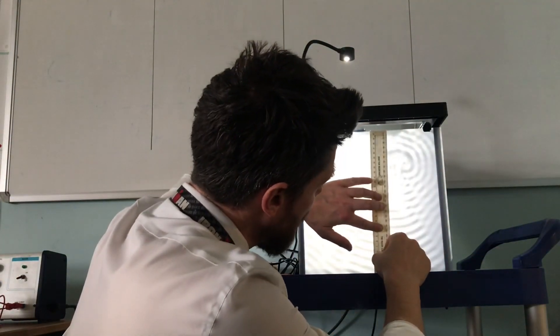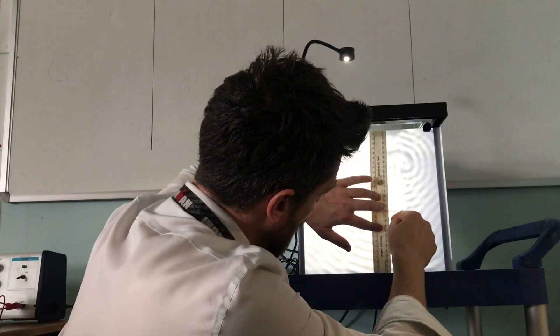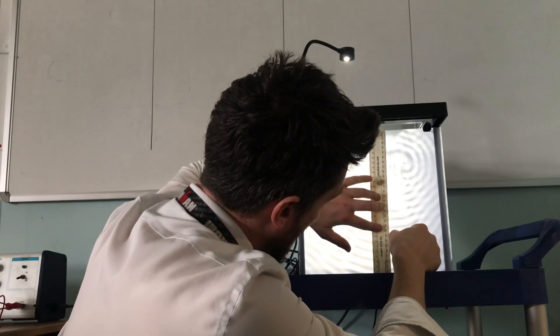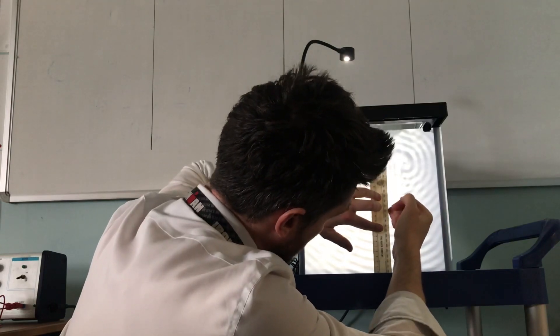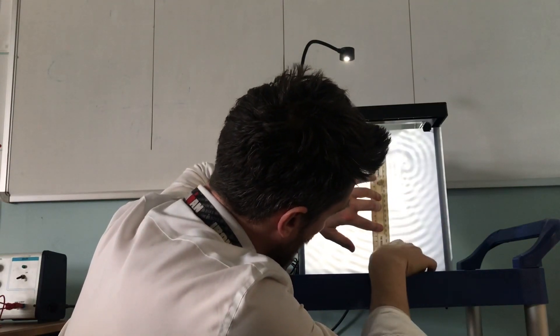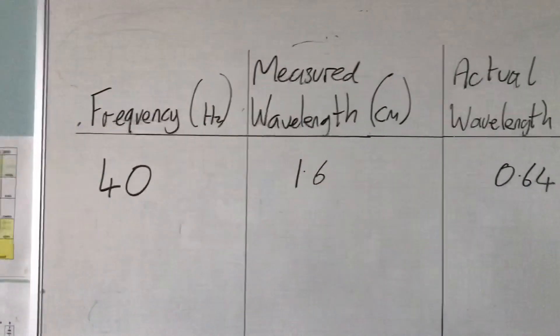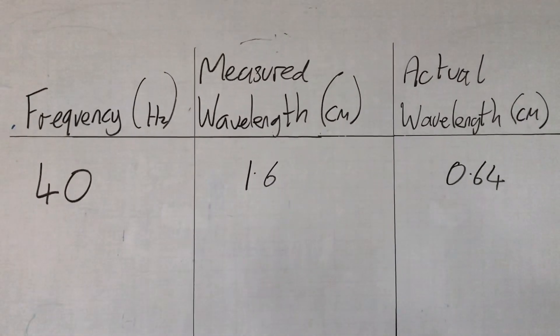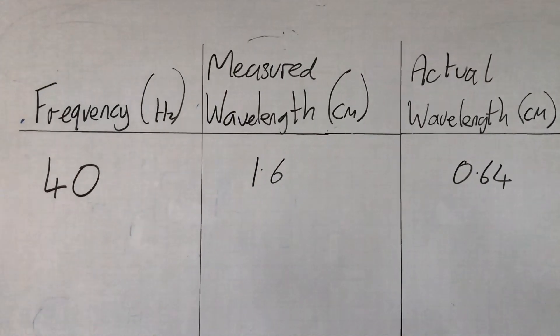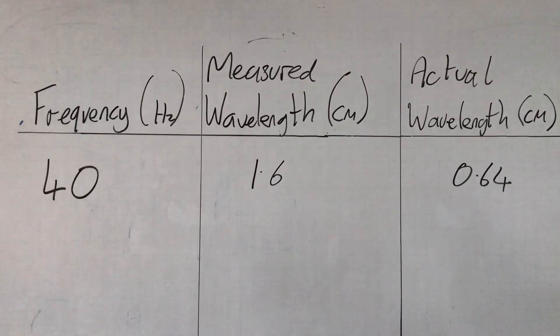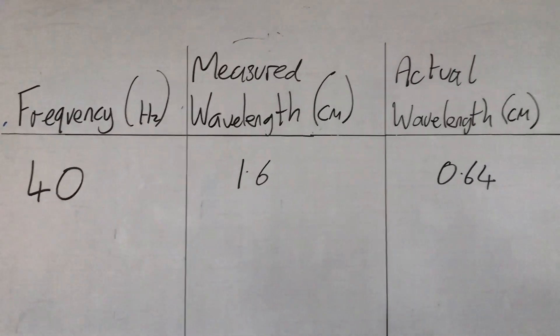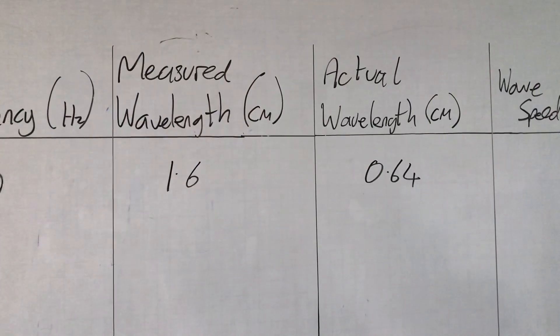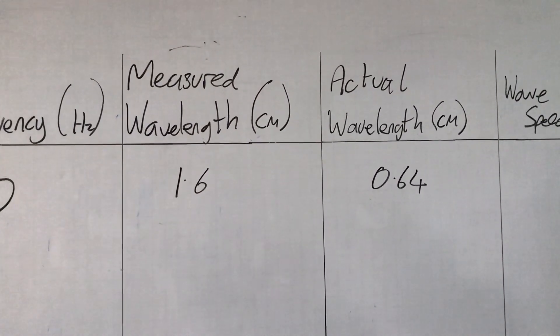Placing the ruler on the white screen and counting five wavelengths, they span from 16 centimetres to 24 centimetres, so five wavelengths is 8 centimetres. Dividing by five gives a measured wavelength of 1.6 centimetres. Since the image is magnified by 2.5, we divide 1.6 by 2.5, giving an actual wavelength of 0.64 centimetres at 40 hertz.